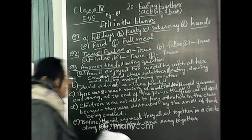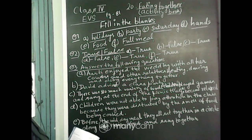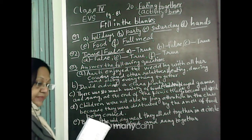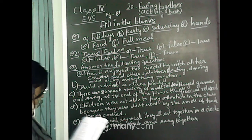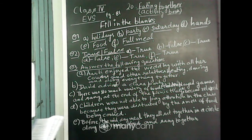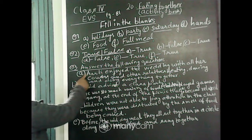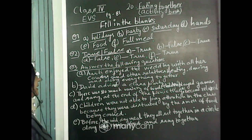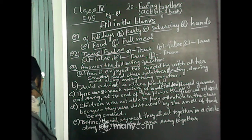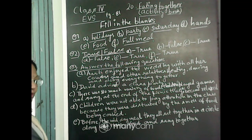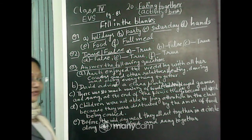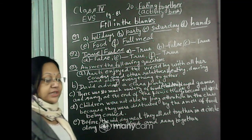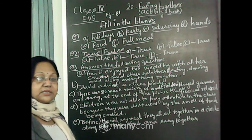Now we will see the question answers. The first question: how did Aarti enjoy the wedding? Write down — Aarti enjoyed the wedding with all her cousins and other relatives by eating, dancing, and doing everything together. Within the feast, she loved to eat and do all things with them.